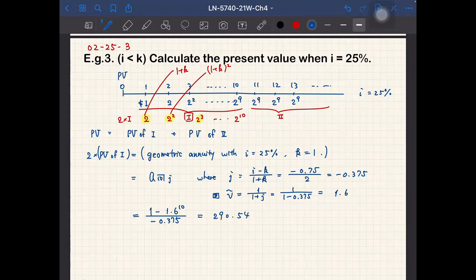So now we can calculate PV. So PV is equal to one half of this, so one half of 290.54 plus the PV of number 2.